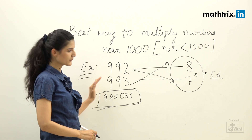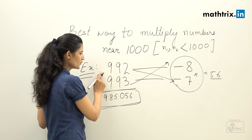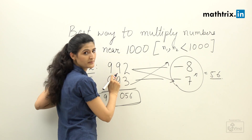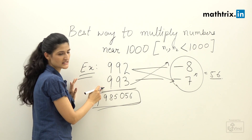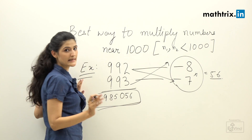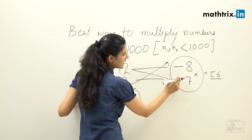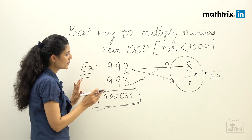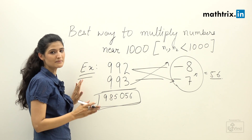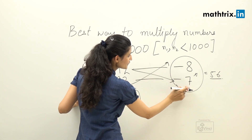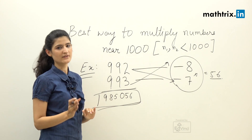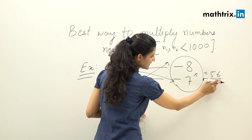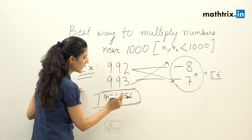Quick recap for 992 into 993: Step one — difference of 992 from thousand is minus eight, difference of 993 from thousand is minus seven. Step two — multiply the differences to get 56. The key point is that the multiplication of differences should always give the last three digits of the answer. Since 56 is two digits, we add one zero to get 056.